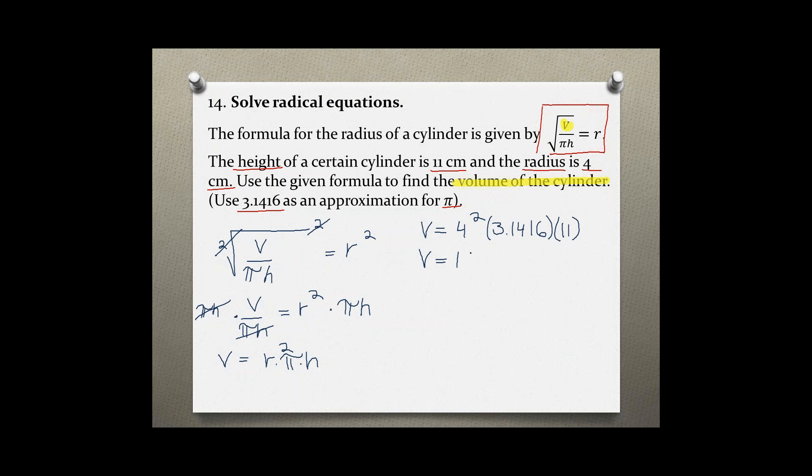Now 4 squared is 16. And because I might need a calculator to do the decimal I am first going to multiply the 16 and the 11 together.